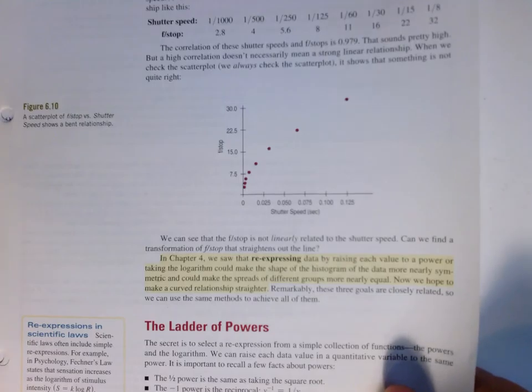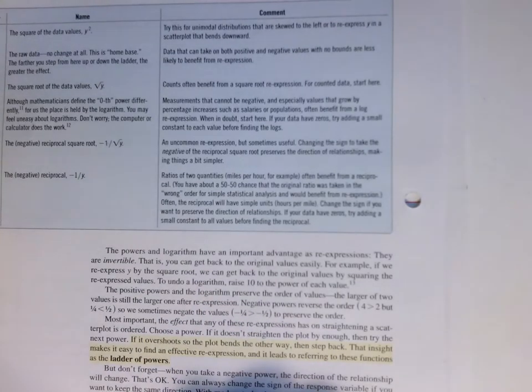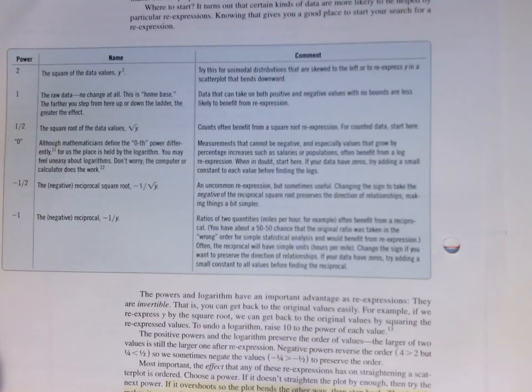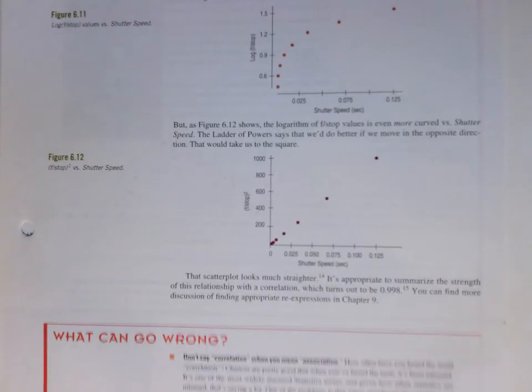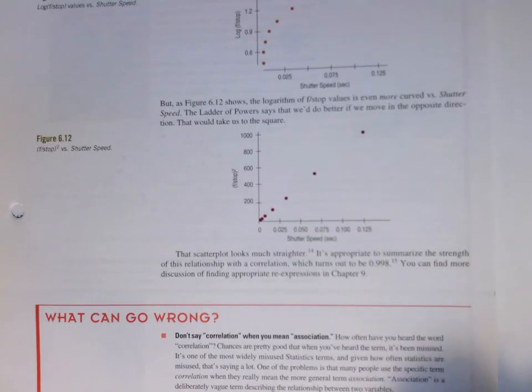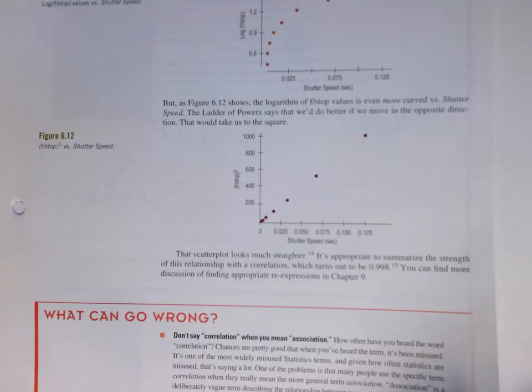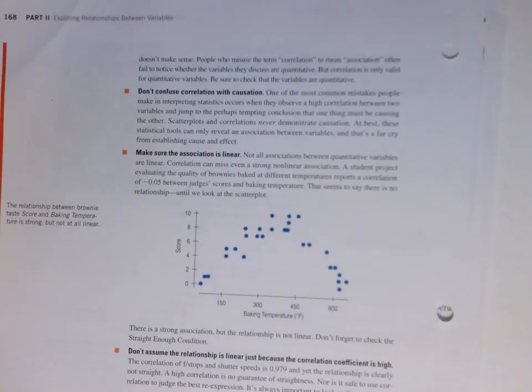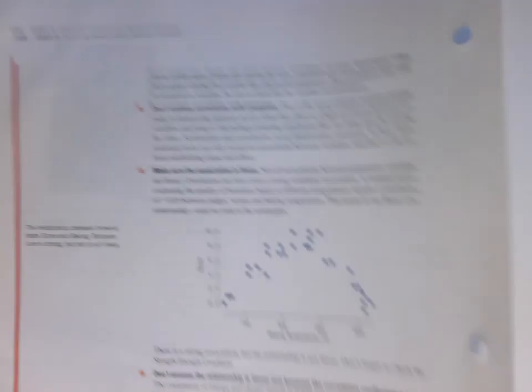And introducing this idea of the ladder of powers. So we're going to have a homework problem on this. So I would encourage you to take a good look. There's some ways, kind of approaches to think about different transformations in an example. As always, the what can go wrong? What happens to good people who do kind of things that they need to think a little bit more about perhaps closes the chapter along with the learning objectives.